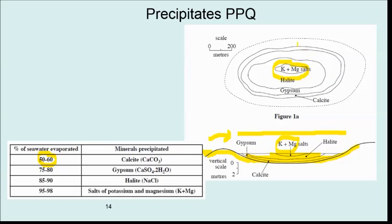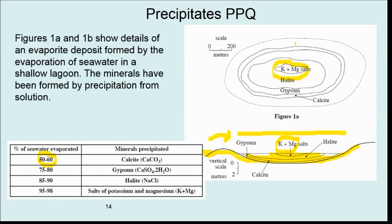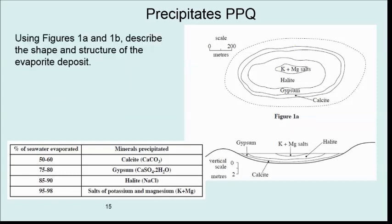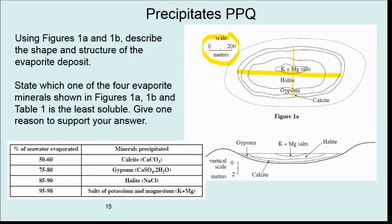This is the plan view — the view from above — of that same circular lake. For the exam questions: question one asks to describe the shape and structure of the evaporite deposit — it would be oval, and you'd use the scale to calculate the width and length of the lake. Question two asks which of the four evaporite minerals is least soluble — that would be calcite, as it's the one precipitated out first.